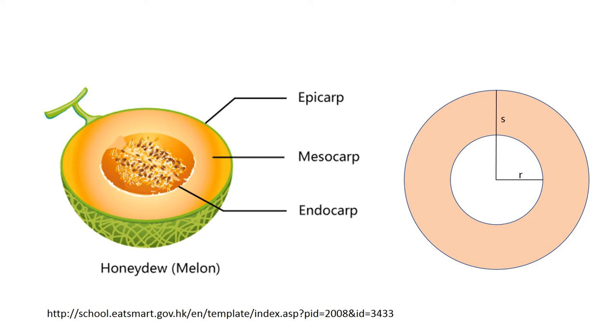The mesocarp is actually limited internally by endocarp, and externally by the epicarp. From mathematical point of view, let's assume that r is the radius of the endocarp, and s is the radius of the epicarp.